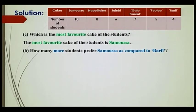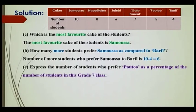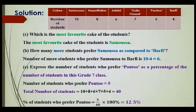How many more students prefer Samosa compared to Burfi? We have 10 students who prefer Samosa and 4 who prefer Burfi. The difference is 10 minus 4, that is 6 more students prefer Samosa to Burfi. Next: express the number of students who prefer Poutou as a percentage. We have 5 students who prefer Poutou, and the total number of students is 10 + 8 + 6 + 7 + 5 + 4, that is 40. The percentage is 5 over 40 times 100%, which is 12.5%.